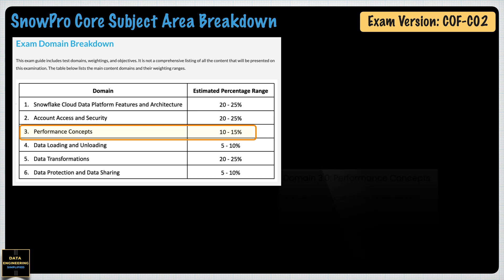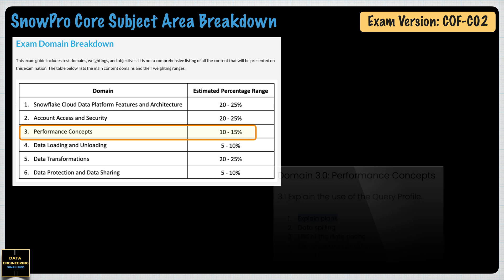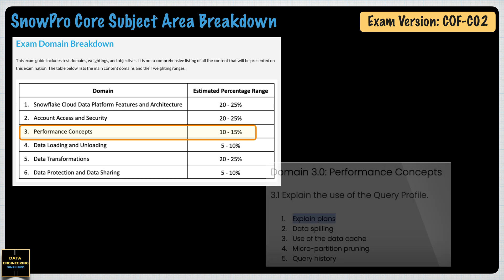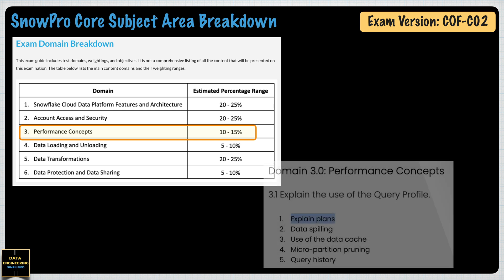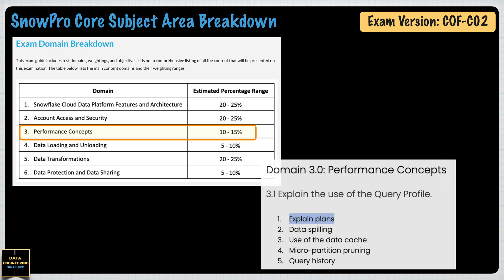Performance concept was part of the old syllabus, but this subtopic Explain Plan was added newly to the Snowflake SnowPro core certification exam. The domain 3.0 Performance Concept has a 10–15% estimated range in your exam, which translates to around 10–15 questions from all the subdomains or subtopics under it.